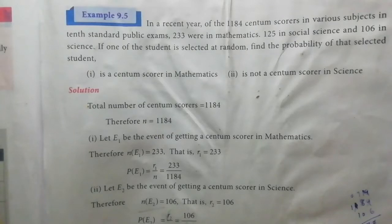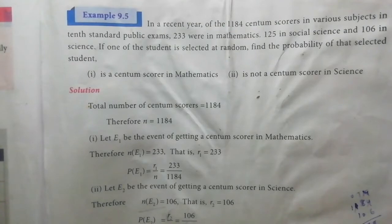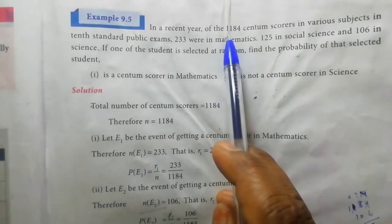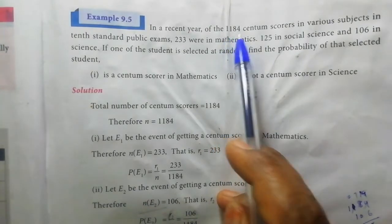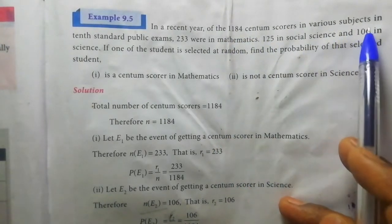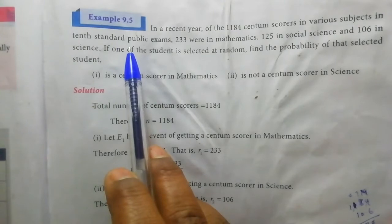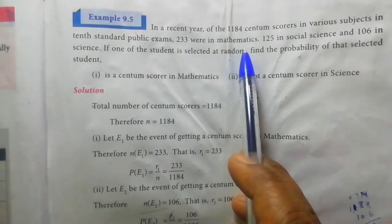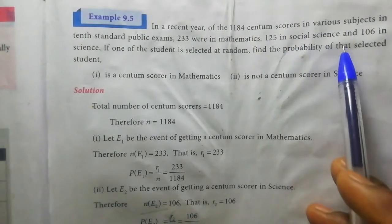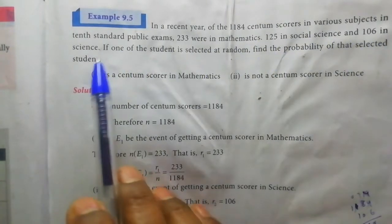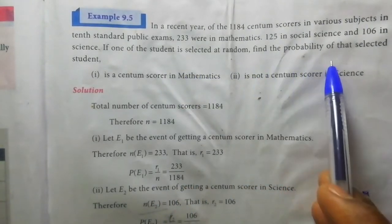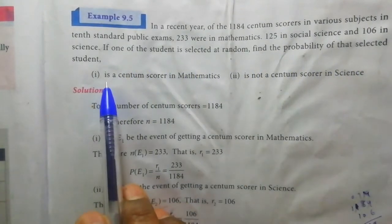Hello friends, welcome to our channel Max Roads. Example 9.5: In a recent year, there were 1184 centum scorers in various subjects in 10th public exams — 233 were in mathematics, 125 in social science, and 106 in science. If one of the students is selected at random, find the probability that the selected student is a centum scorer.